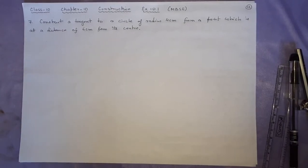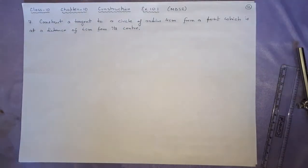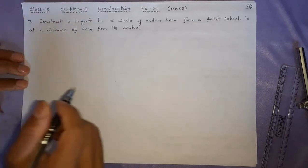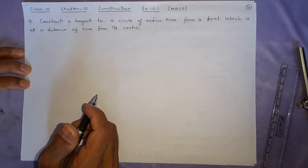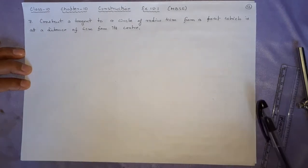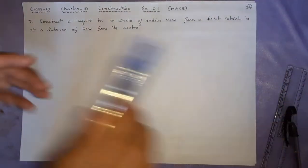Welcome viewers. This is Chapter 10, Class 10 MBSC, Exercise 10.1, Question Number 7. It is similar to the previous question number 6; the only difference is the radius of the circle. I'll make it a little faster.